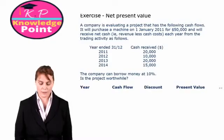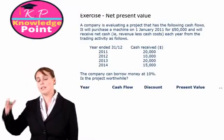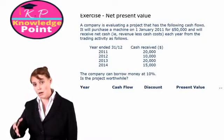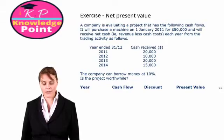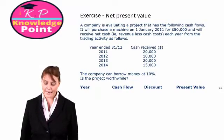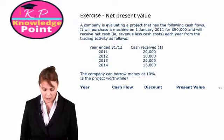It will purchase a machine on the 1st of January 2011, so we'll take that to be the present time, T0, for $50,000 and will receive net cash flows each year from the trading activity as follows.